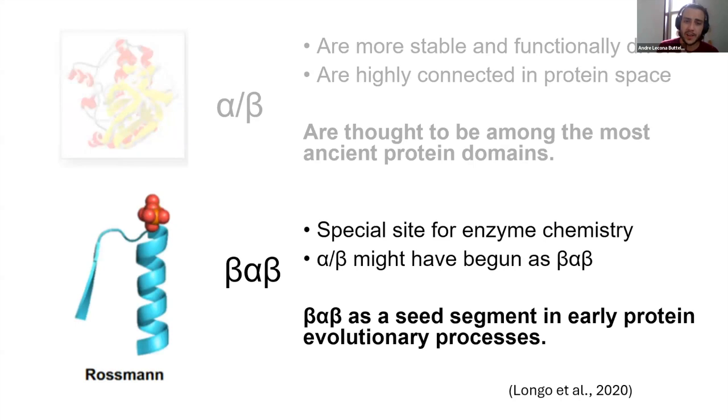Specifically, in the alpha slash beta class, we have something called a beta alpha beta motif. What is this? This is a mix of alpha and beta in a very particular structure or motif, or if you think back to the origami metaphor, it's a fold, right? It's like folding your paper in the middle. In the same way, you have a very specific protein fold that has special enzyme chemistry, specifically with phosphate, which makes it very interesting because life uses phosphate for all different types of chemistries from ATP to DNA, right? So because of this, there is evidence that the whole alpha slash beta class that is very important for protein evolution actually started as just this segment, the beta alpha beta fold. So in this sense, beta alpha beta can be thought of as a seed for early protein evolutionary process.